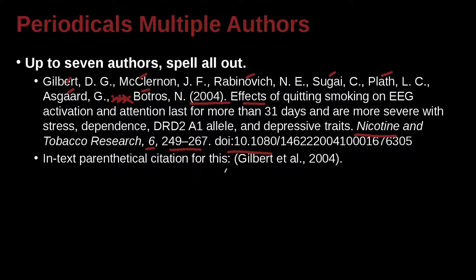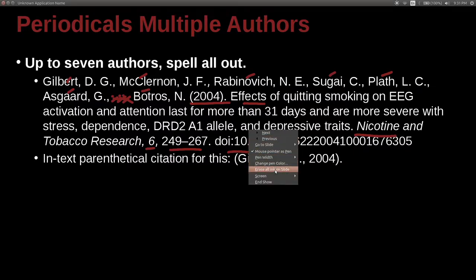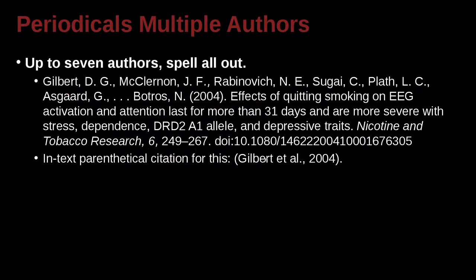The in-text parenthetical citation for this — so if you were looking inside your paper, inside the sentence you wrote — this is what it would look like: Gilbert et al. Why et al.? Because remember in the APA guideline, if you have seven or more authors, you can go ahead and use et al. That's different than MLA, so keep that in mind.